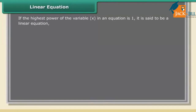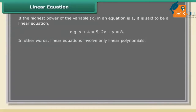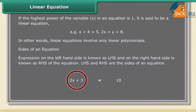Linear equation: if the highest power of the variable x in an equation is 1, it is said to be a linear equation — for example, x + 4 = 5, or 2x + y = 8. In other words, linear equations involve only linear polynomials. The expression on the left-hand side is known as LHS and on the right-hand side is known as RHS of the equation.